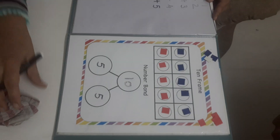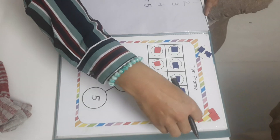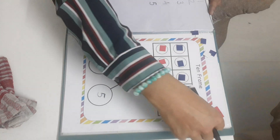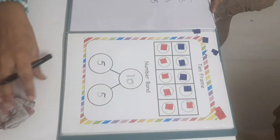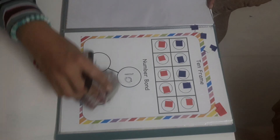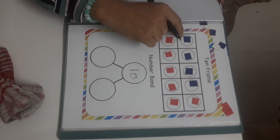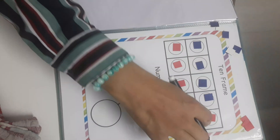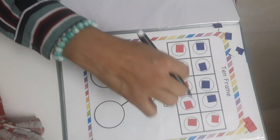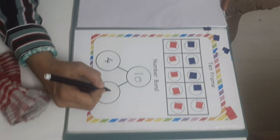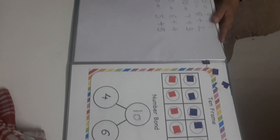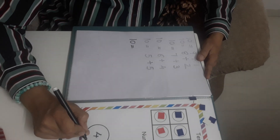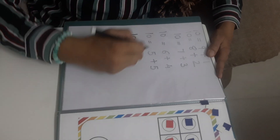Very good. Now let's remove one more red. So now let's write the number bond: 1, 2, 3, 4 blue and 1, 2, 3, 4, 5, 6 red. Very good. So 10 is equal to 4 plus 6.